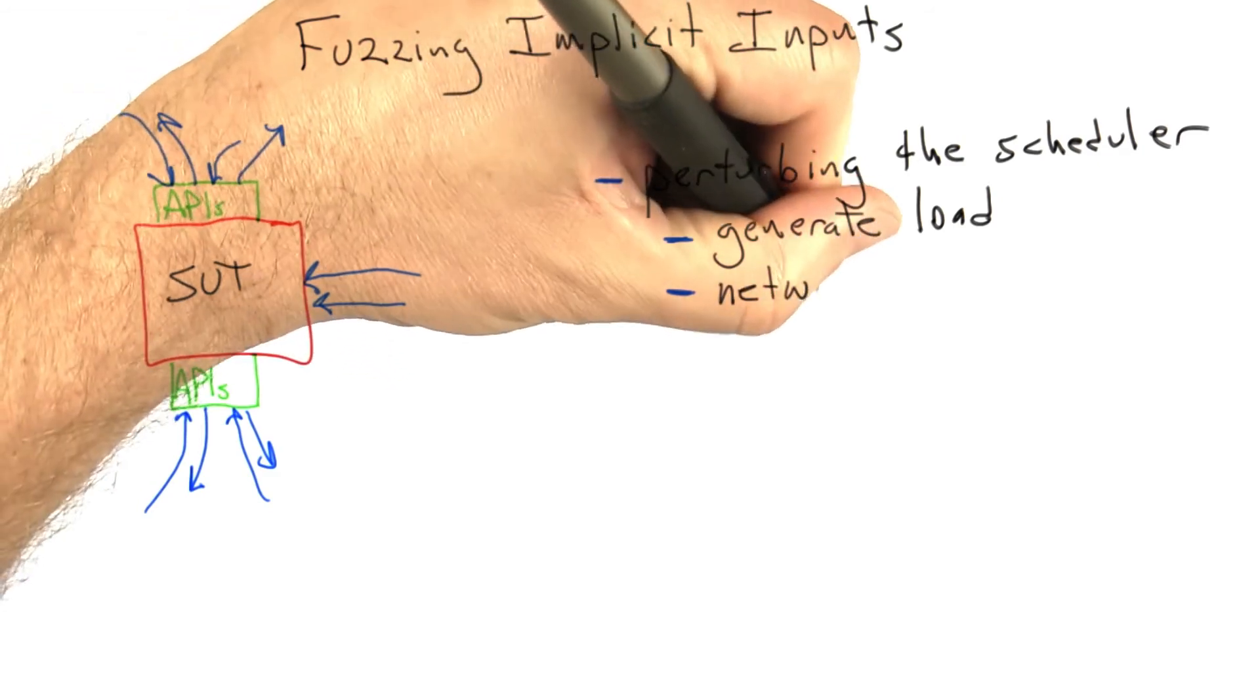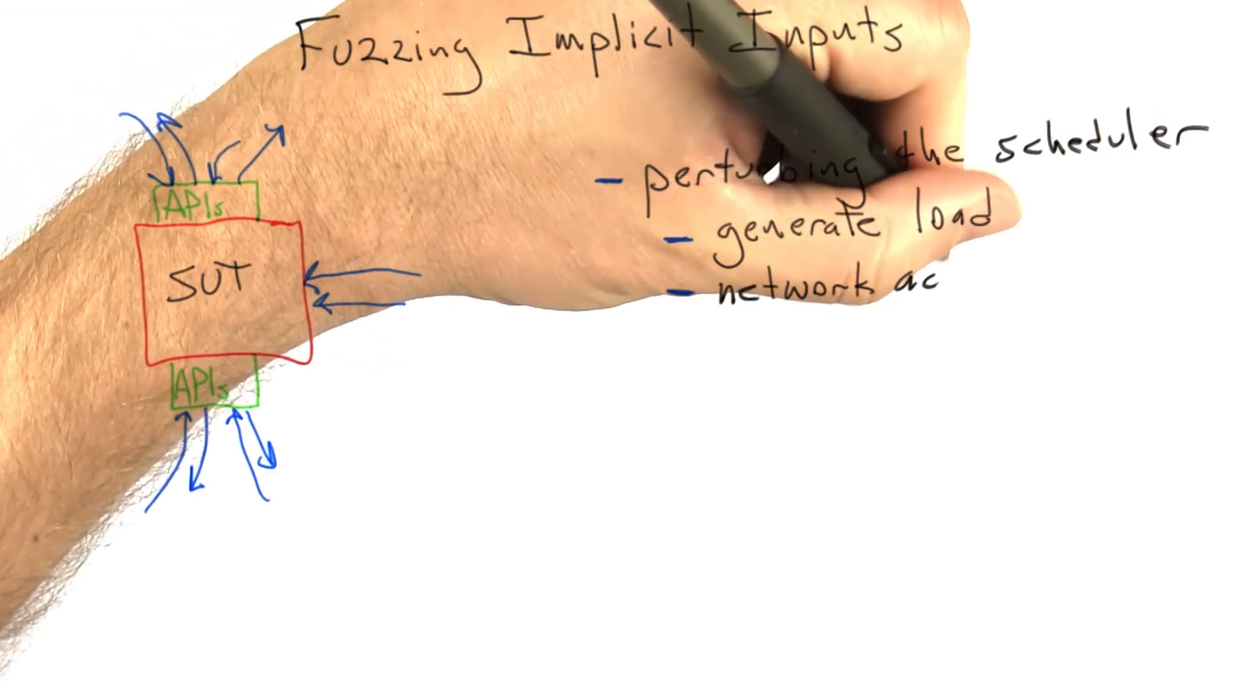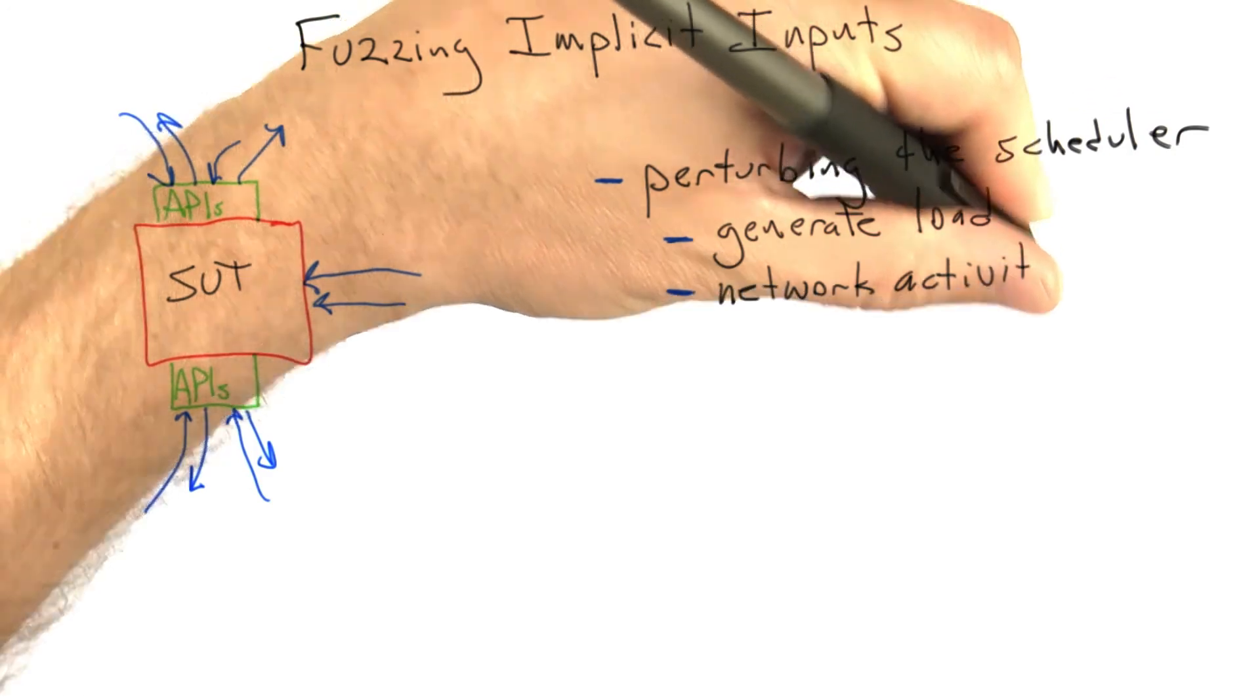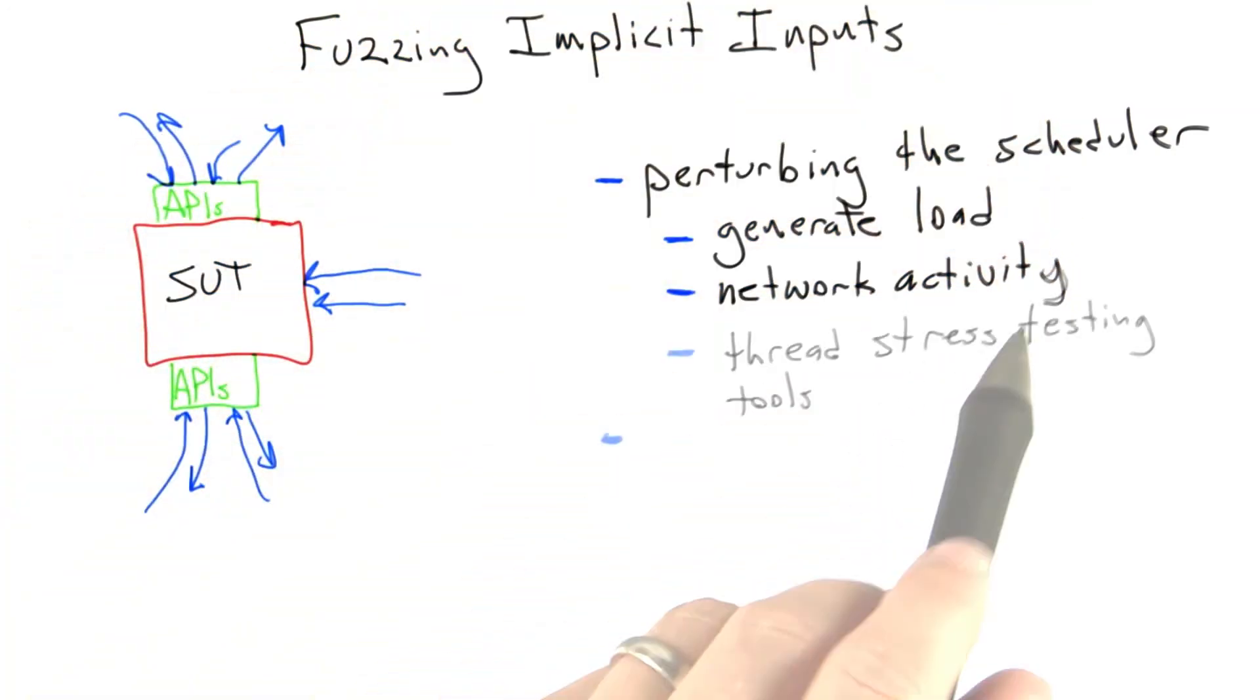Generating load by running other applications is important. Generating network activity on a machine can also be valuable. Network activity is interesting because incoming network packets cause interrupt handlers to fire, lots of kernel routines to run, and cache lines to be stolen away from your application, causing some perturbation of the schedule.